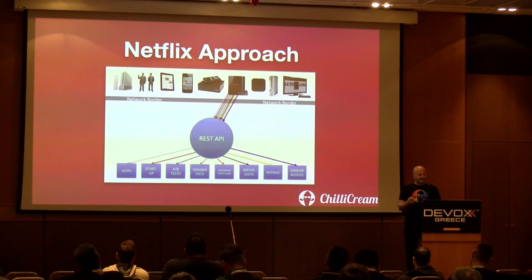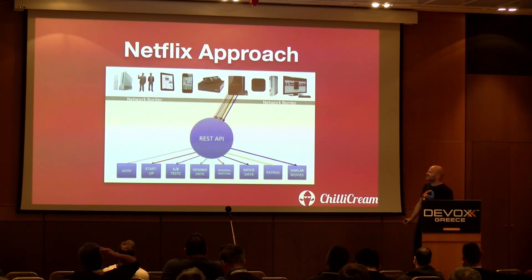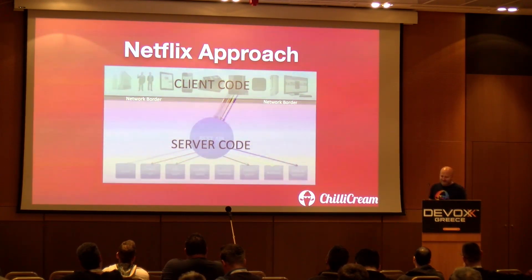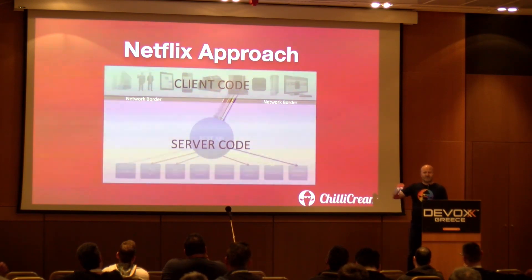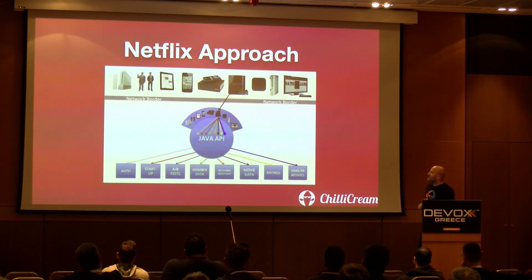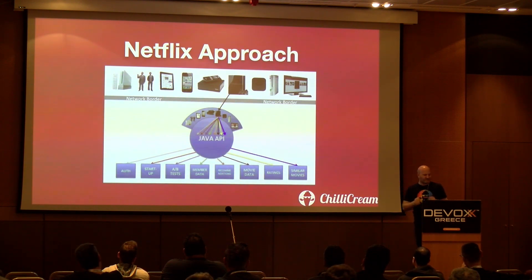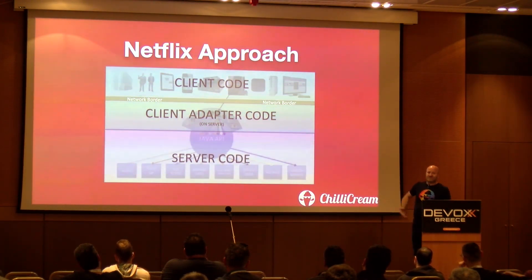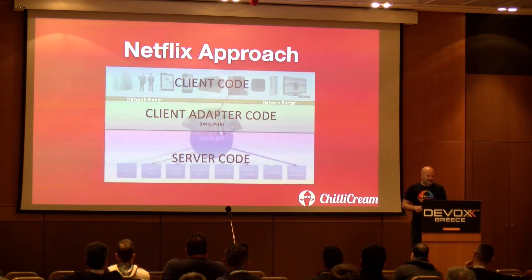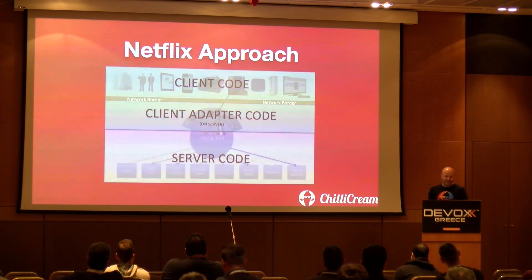Netflix had the same problem — they had tons of devices and were doing data aggregation per application on the client side. Their idea was an iteration of the BFF pattern: they concluded they had to break the layers and put some client code in the backend. They called this the client adapter pattern — a layer on top of their Java API to aggregate data for a specific client in the backend. It was somewhat more efficient than client-side aggregation, but still had the downsides of BFF and was very proprietary.